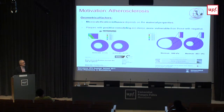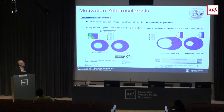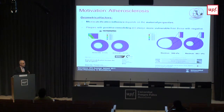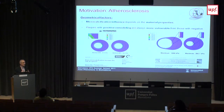Another important mechanical parameter is plaque remodeling. Positive remodeling refers to outward growth of the plaque, while negative remodeling is inward growth. Comparing both types while keeping all other geometry and material parameters constant, we found that vulnerability is consistently increased for positive remodeling. Importantly, positive remodeling corresponds to the initial stages of atherosclerosis and is usually asymptomatic.